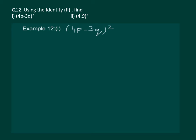We have to find the square of 4p minus 3q. It is comparable to our identity number 2. So, a minus b whole square is equal to a square minus 2ab plus b square.